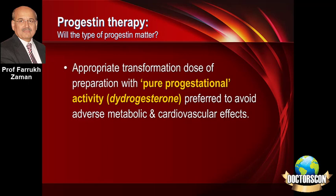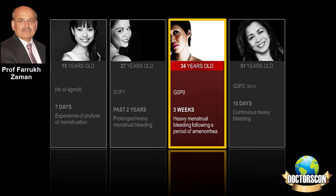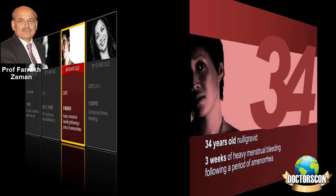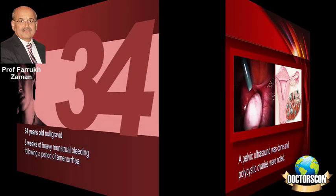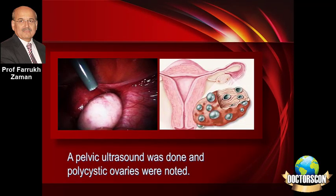The kind of progesterone selected should be such that it would not give rise to adverse metabolic or cardiovascular effects. Now take the example of a third patient who is 34 years of age, nulliparous, with three weeks of heavy menstrual bleeding preceded by a period of amenorrhoea. Ultrasound, which is now widely available, can easily make the diagnosis of polycystic ovaries.